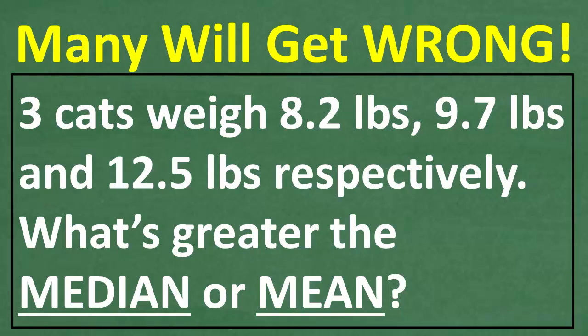Three cats weigh 8.2 pounds, 9.7 pounds, and 12.5 pounds respectively. What's greater, the median or the mean when it comes to the weight of these cats?